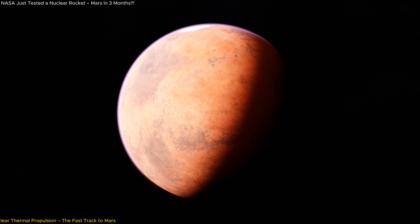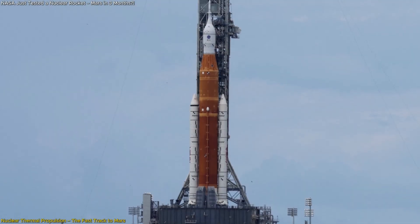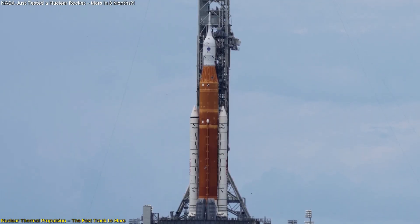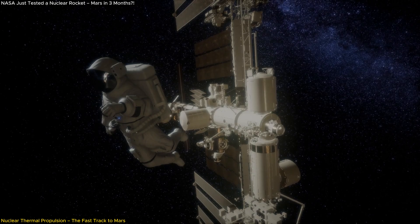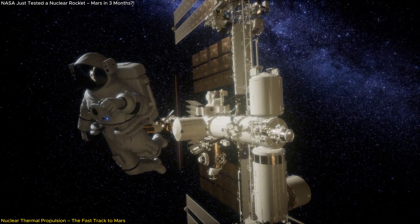One of the biggest obstacles in sending humans to Mars is the time it takes to get there. Traditional chemical rockets require six to nine months for a one-way trip, exposing astronauts to harmful radiation, psychological strain, and logistical challenges.